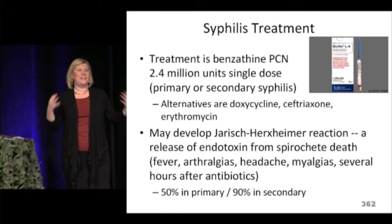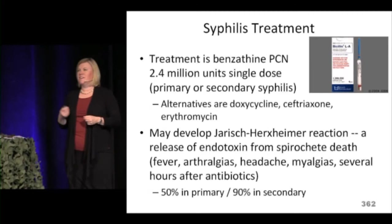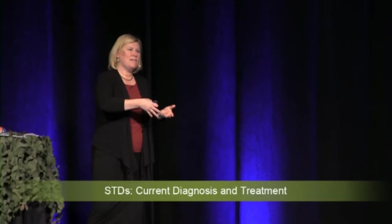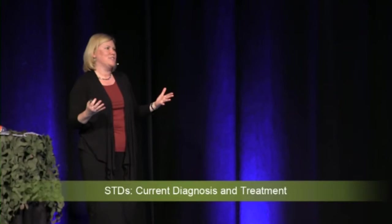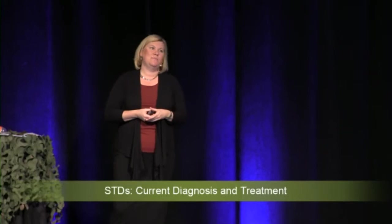Syphilis is still treated with penicillin — no resistance has developed. Primary and secondary syphilis get 2.4 million units IM; tertiary syphilis requires more frequent dosing. Penicillin-allergic patients can use doxycycline, ceftriaxone, or erythromycin. Patients treated with penicillin can develop the Jarisch-Herxheimer reaction — the penicillin attacks the spirochete, releasing endotoxin, causing fever, joint pain, and malaise. This occurs about half the time in primary syphilis and more commonly in secondary syphilis.